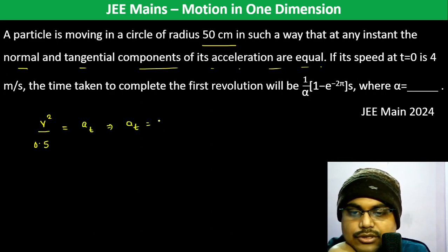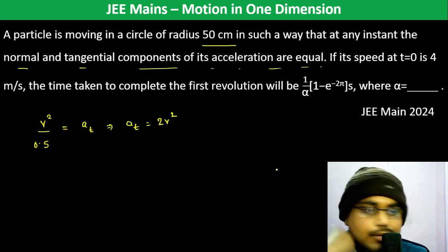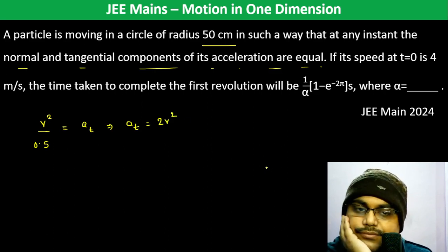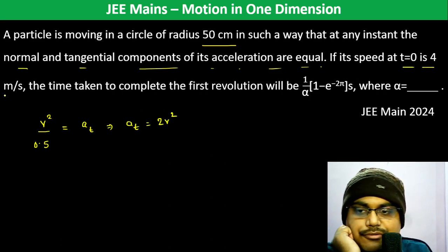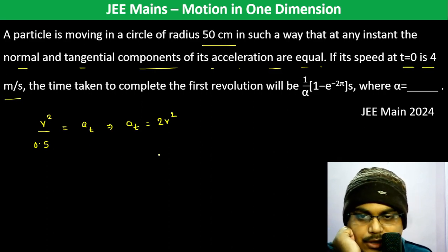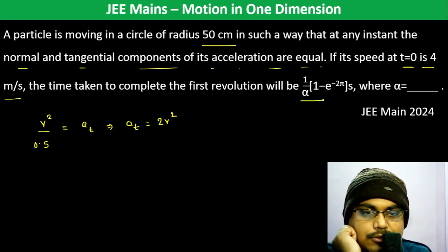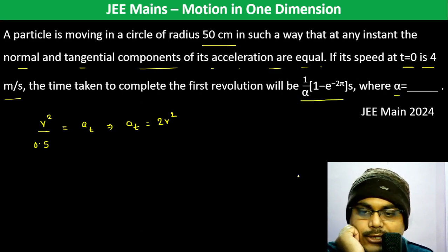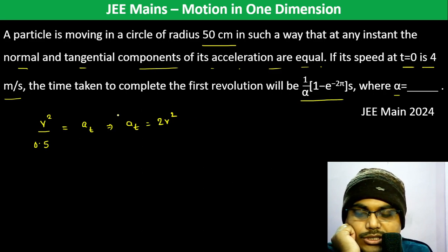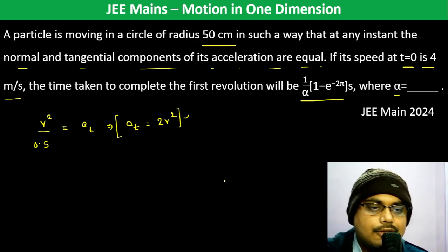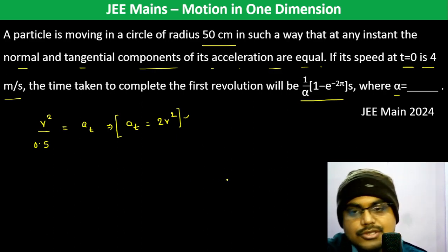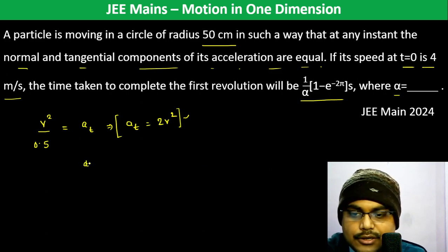The tangential acceleration becomes 2v². If its speed at t = 0 is 4 meters per second, the time taken to complete the first revolution will be determined. Here alpha is the acceleration. We can write dv/dt is equal to 2v².